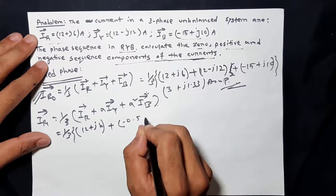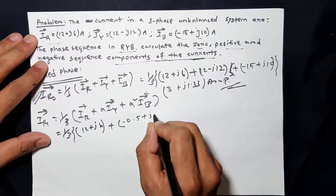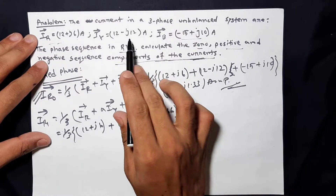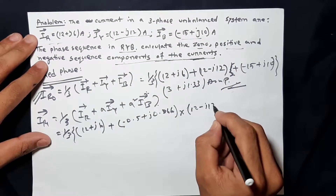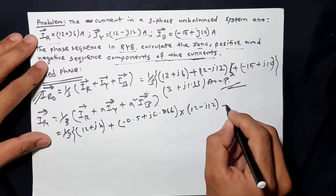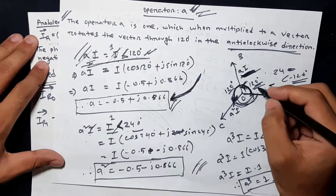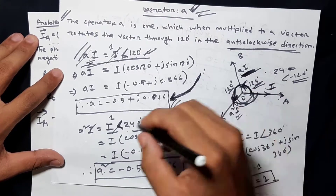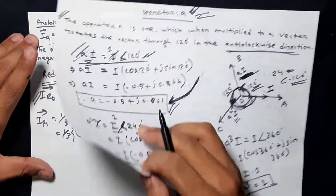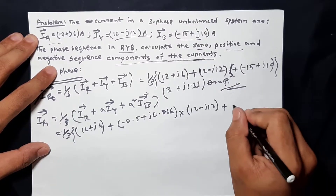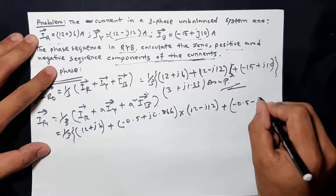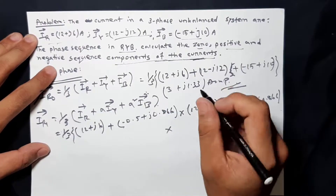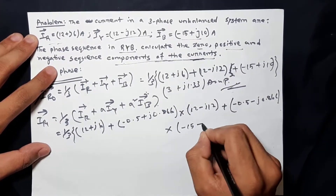The value is (−0.5 + j0.866) into IY, so this is a factor plus IY plus IY. And IB: simply (−zero + j10).